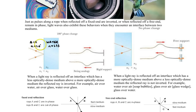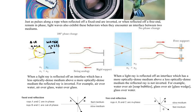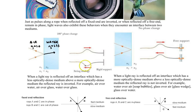First, we need to review what happens when light travels from a less dense to a more dense medium. For example, going from an index of refraction of 1 to 1.33 — the light will reflect off the surface. Some will transmit, but the reflected light undergoes a 180-degree phase change, similar to a rope pulse hitting a rigid barrier, which comes back flipped over.